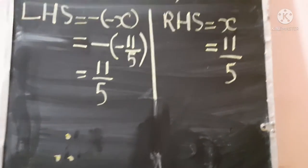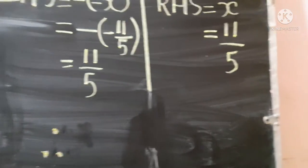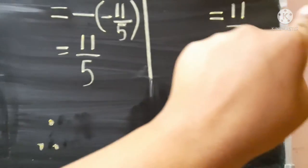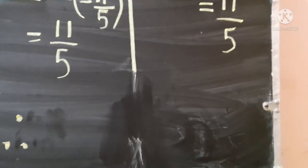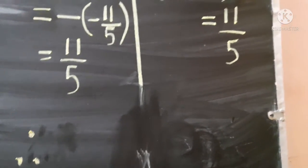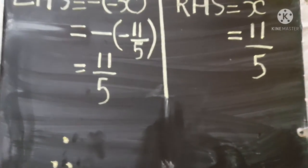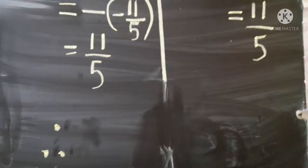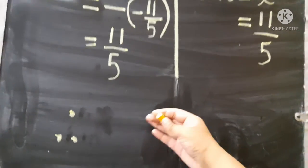Both answers are the same and they are also positive integers. LHS equals positive 11 upon 5 and RHS also equals positive 11 upon 5. It is important to write the final answer, so we write: LHS equals RHS.